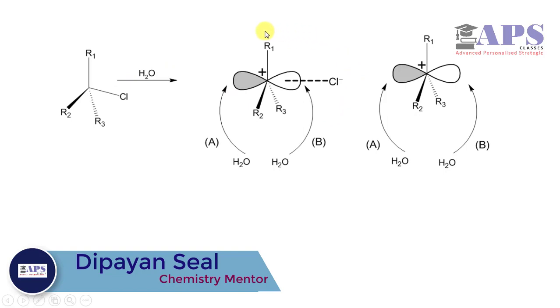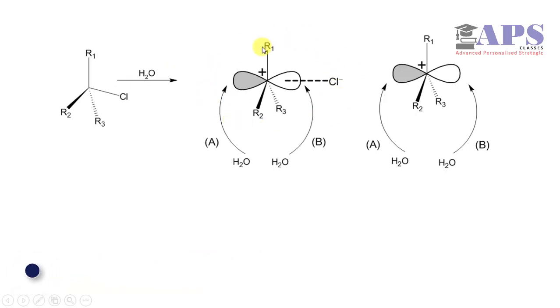This diagram represents the intimate ion pair with positive charge and negative charge attracted by coulombic force of attraction. Now if water wants to approach this carbocation, it can easily approach from left side and inversion product can be formed.